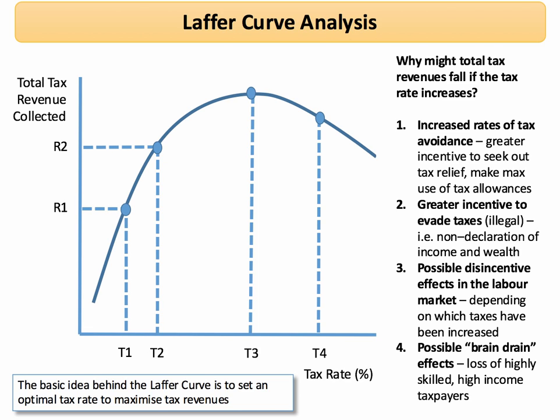A third key reason is often linked to the labour market: if we increase the tax rate, there could be some disincentive effects for people either to take a job or to earn some extra income. That might apply particularly to people at the top end of the labour market, but it can also be a factor when we think of the poverty trap for people at the lower end of the earnings scale.